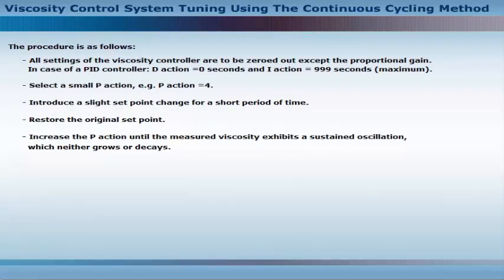The procedure is as follows: All settings of the viscosity controller are to be zeroed out, except the proportional gain. In case of a PID controller, D-action equals 0 seconds and I-action equals 999 seconds. Select a small P-action, such as P-action equal to 4.